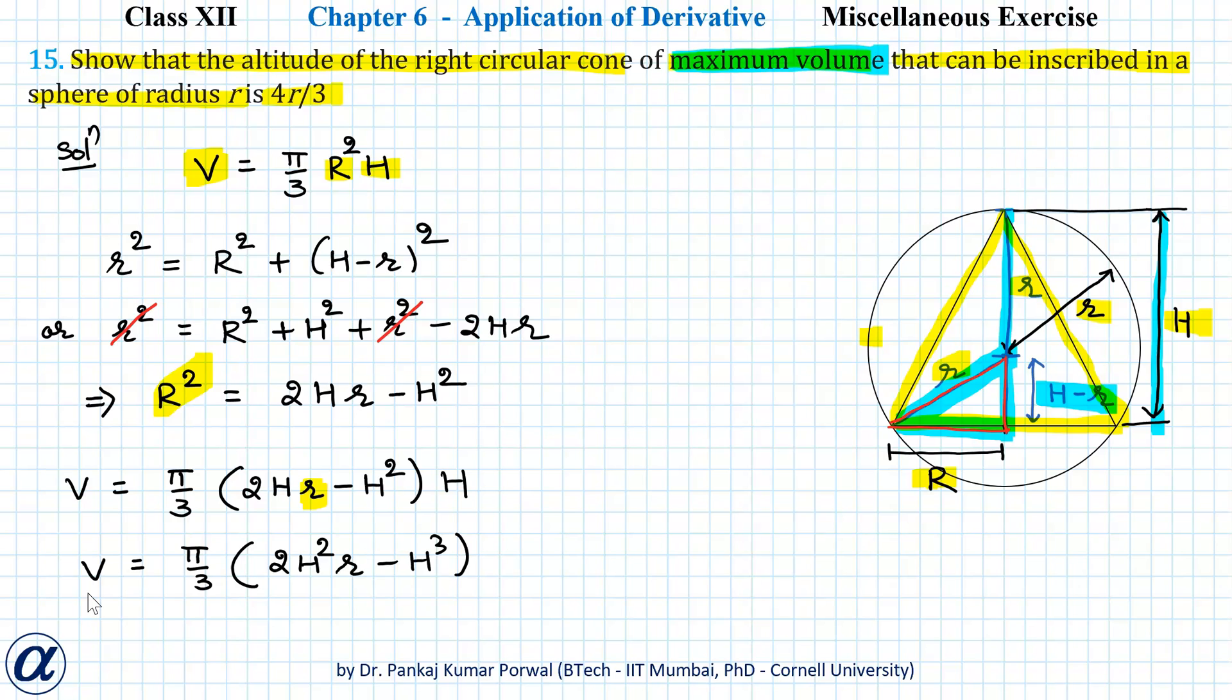Now we want to maximize the volume of the cone and to maximize V we need to set dV/dH = 0, and dV/dH will be equal to π/3(4Hr - 3H²) and this we have to set equal to 0.